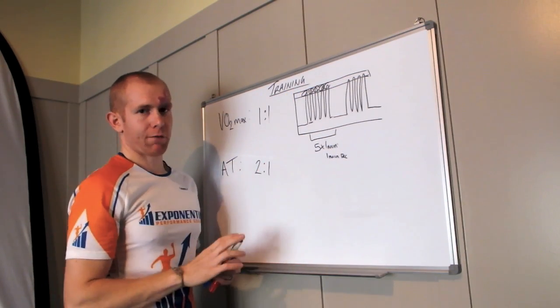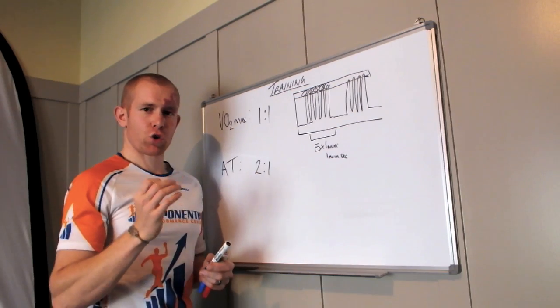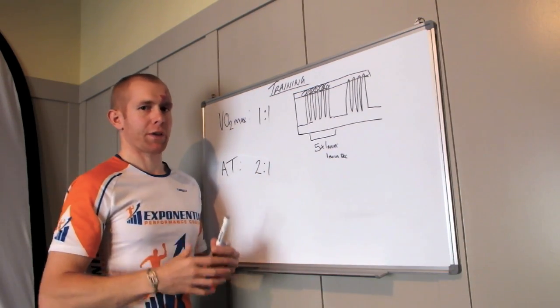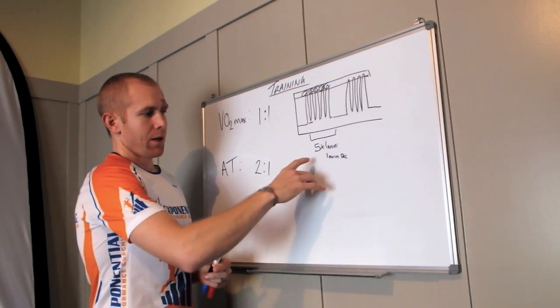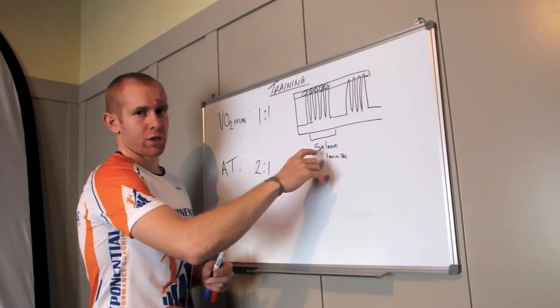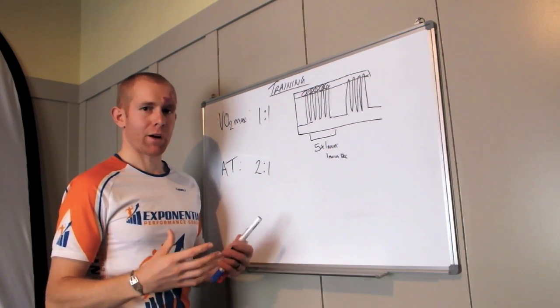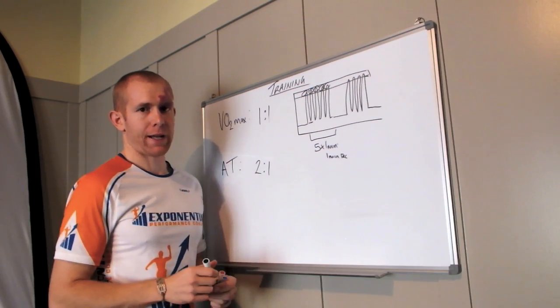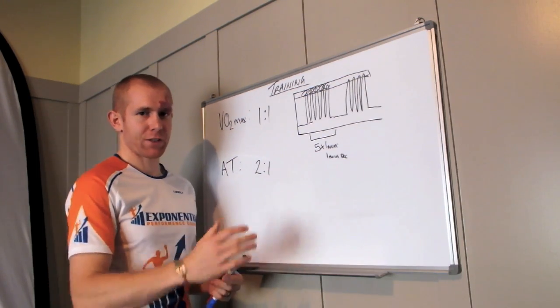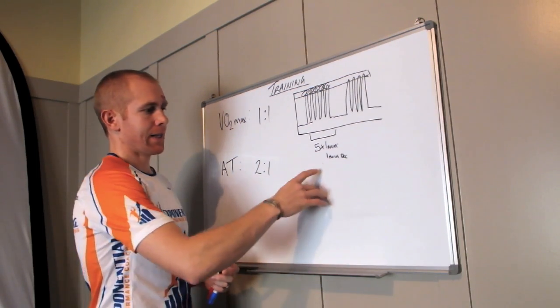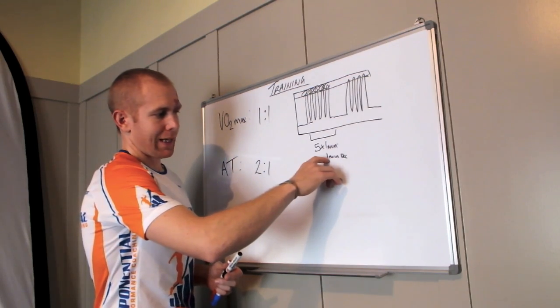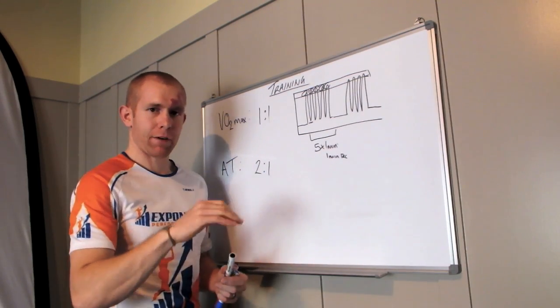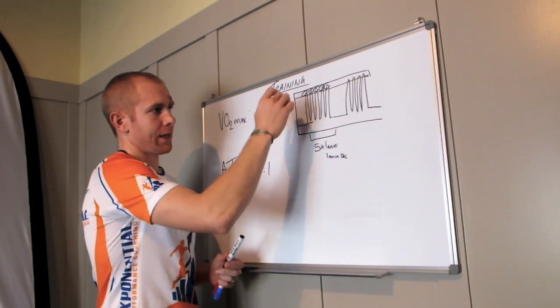Then we have short recoveries, but they're not short relative to how long we work. They're exactly the same. We want to keep the interval short so not too much lactate's produced. We're not worried about lactate. We don't want to accumulate it like we will later on in our anaerobic threshold. We want to keep that down so that our work rate can stay high.